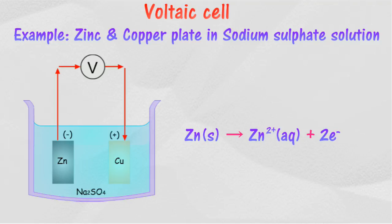Electrons will flow through the external circuit from the zinc plate to the copper plate, producing electric current. At the copper plate, hydrogen ions, which are lower in position than sodium ions in the electrochemical series, will accept electrons and be discharged.